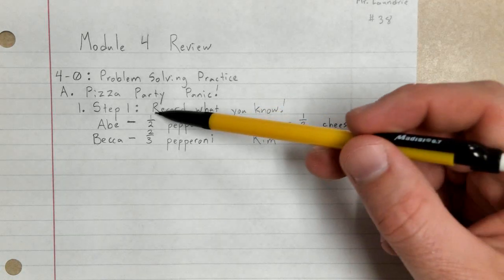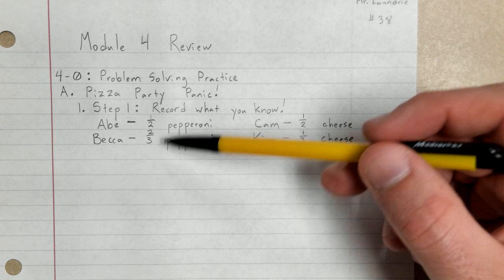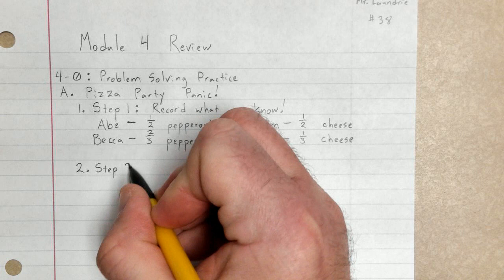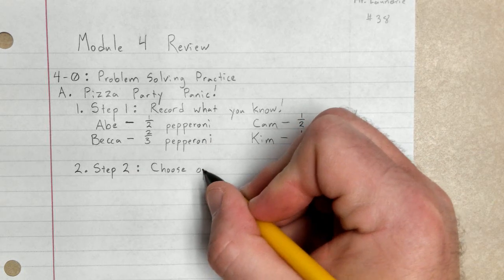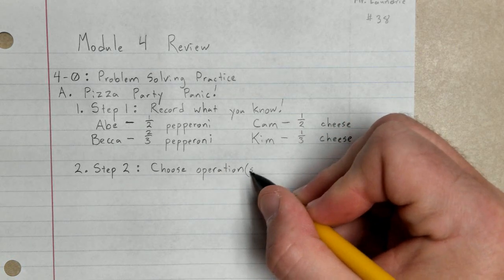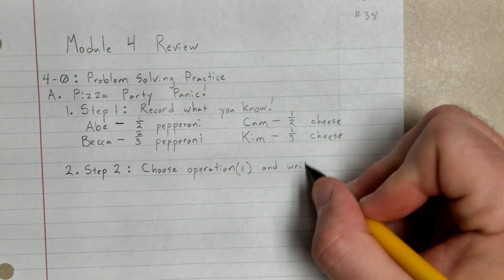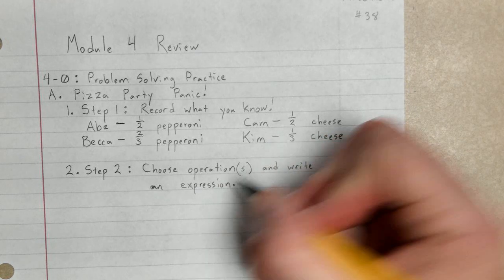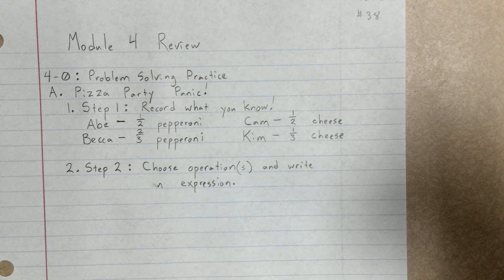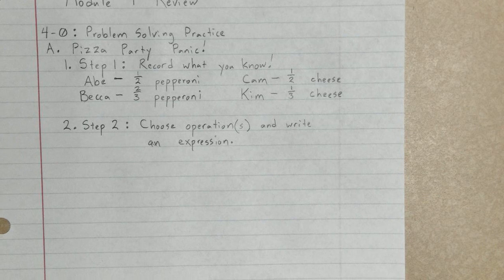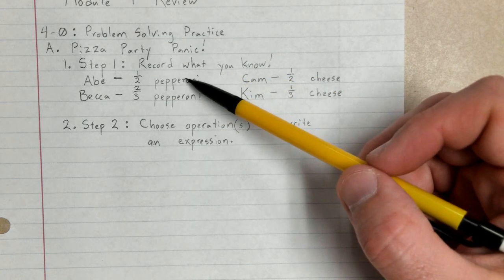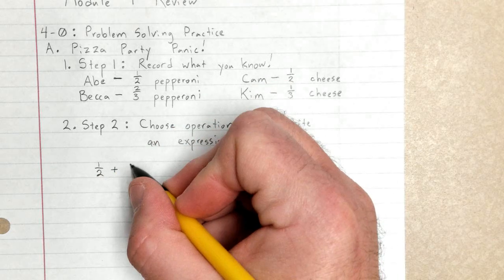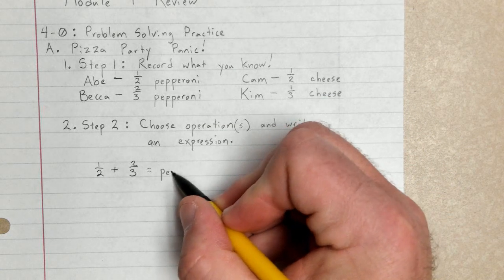Now what I have to do is basically combine these fractions to figure out how much pepperoni pizza I need and how much cheese pizza I need. So step two, we're going to choose operations and write an expression. I already said combine, and many of you may already be thinking, well if I need half a pepperoni pizza and two thirds of a pepperoni pizza, then I am probably going to be adding one half plus two thirds. This should give me the amount of pepperoni that I need.